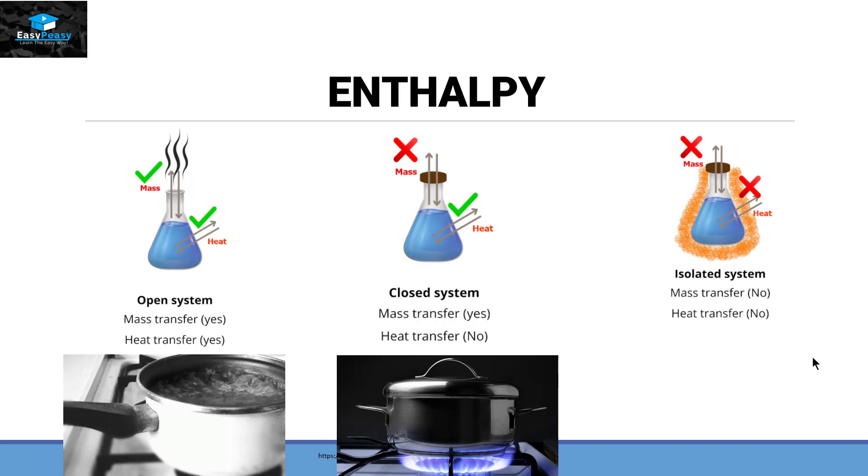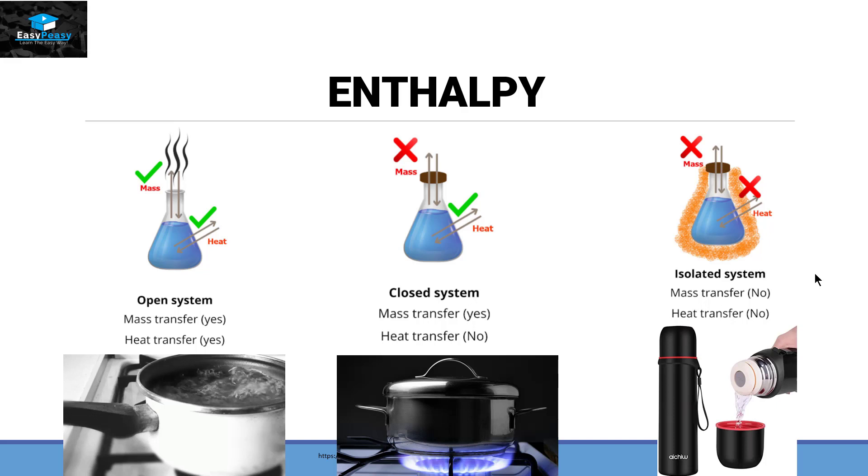The third type of system is called an isolated system, in which neither mass nor heat can transfer from the system to its surrounding. For example, a coffee thermos, in which the least amount of heat can be transferred from the system into the surrounding. There is no real life example of an isolated system. Now in all these three systems, the most amount of energy is present in the isolated system. So the total amount of energy present in the system is called enthalpy. So in all these three examples, isolated systems have the highest enthalpy.